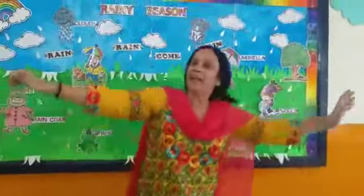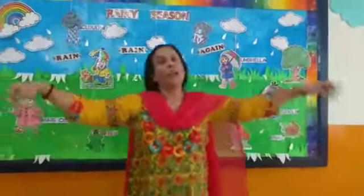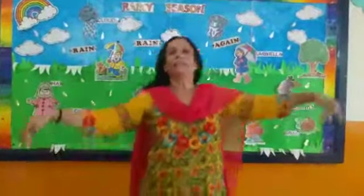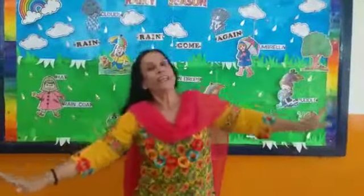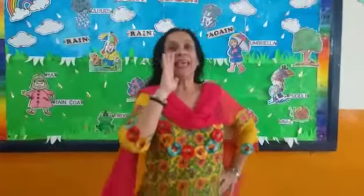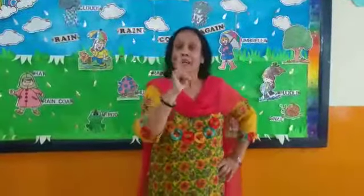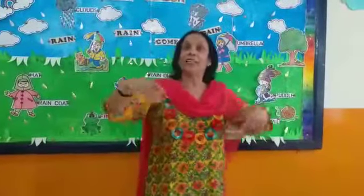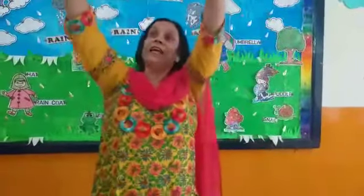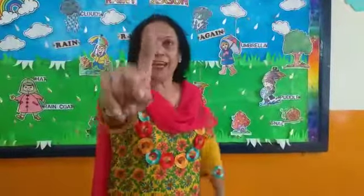Chidiyah, chidiyah, udti jay. Chidiyah, chidiyah, khushi se gai. Do chhoti chidiyah, dhup rahi thishe. Ek udke chaligay, baaki bachi ee.